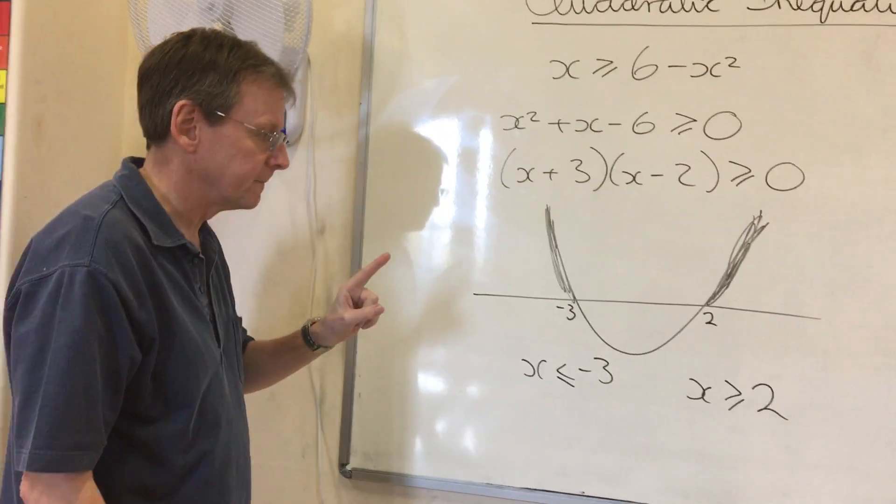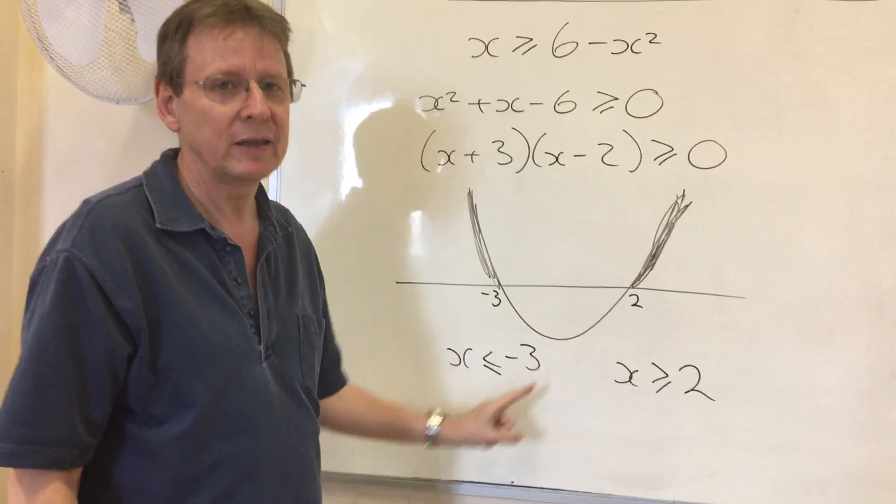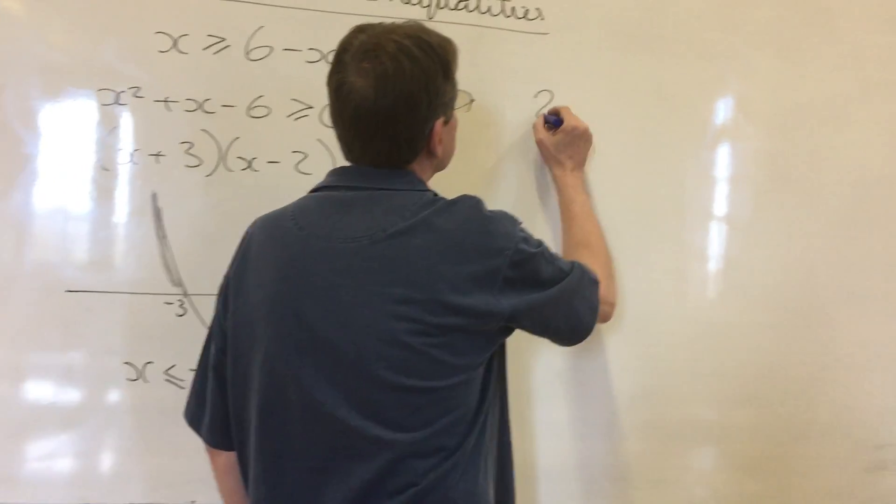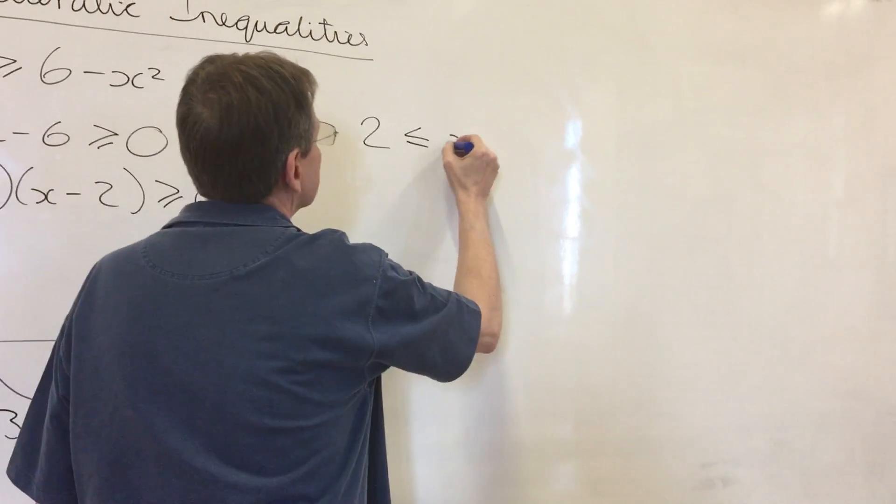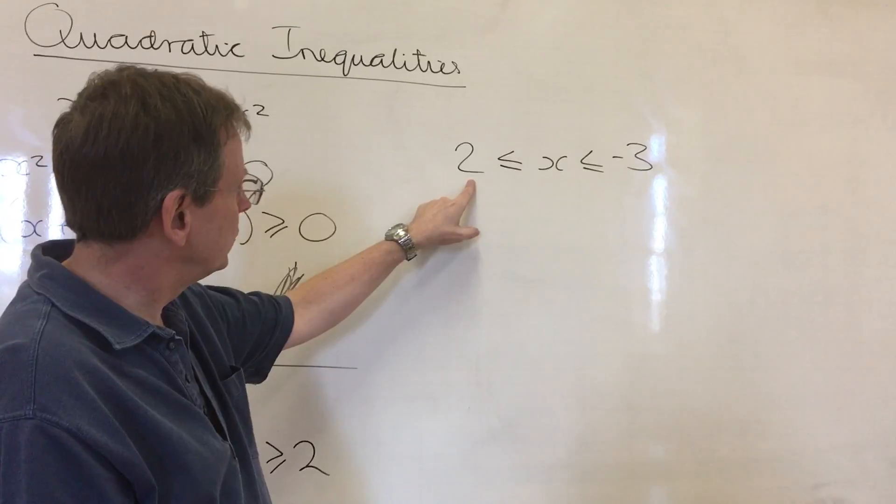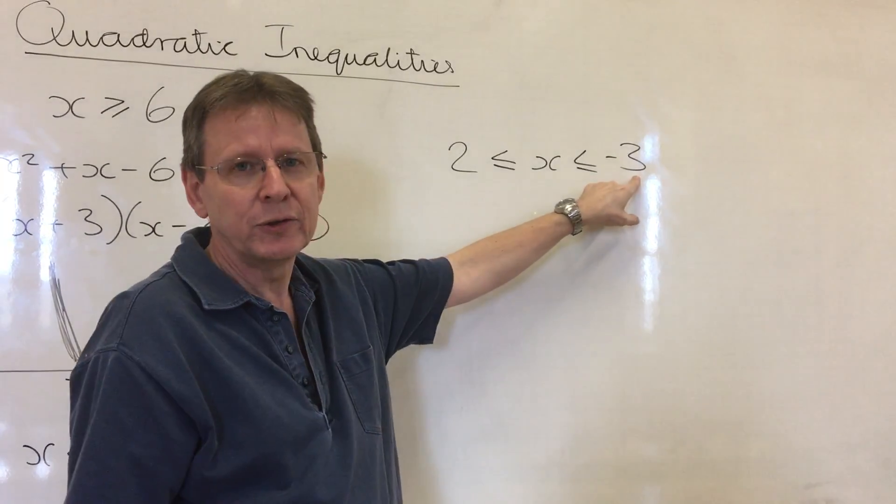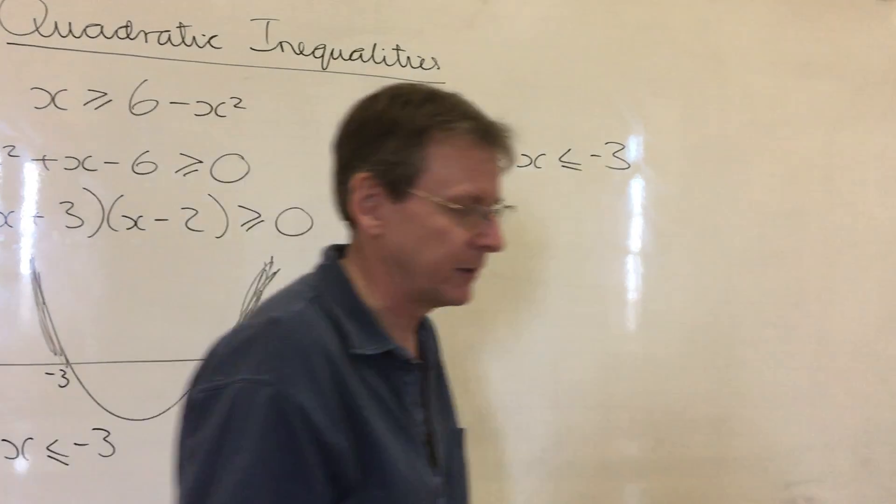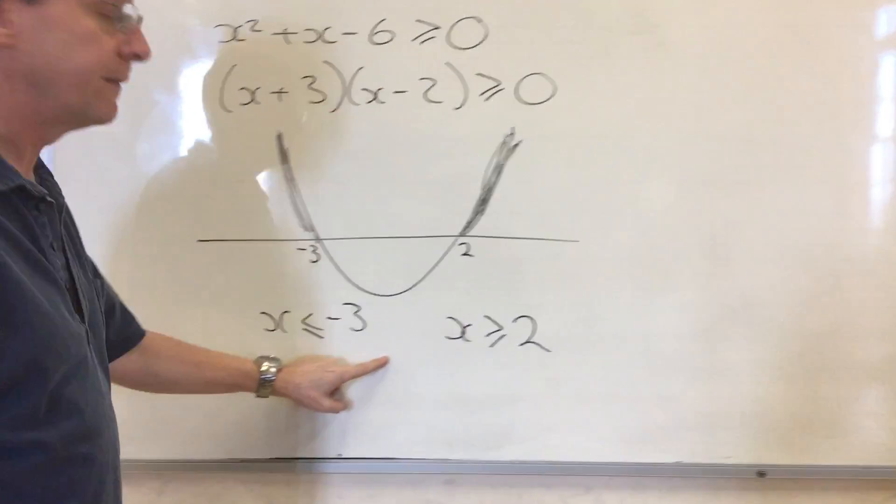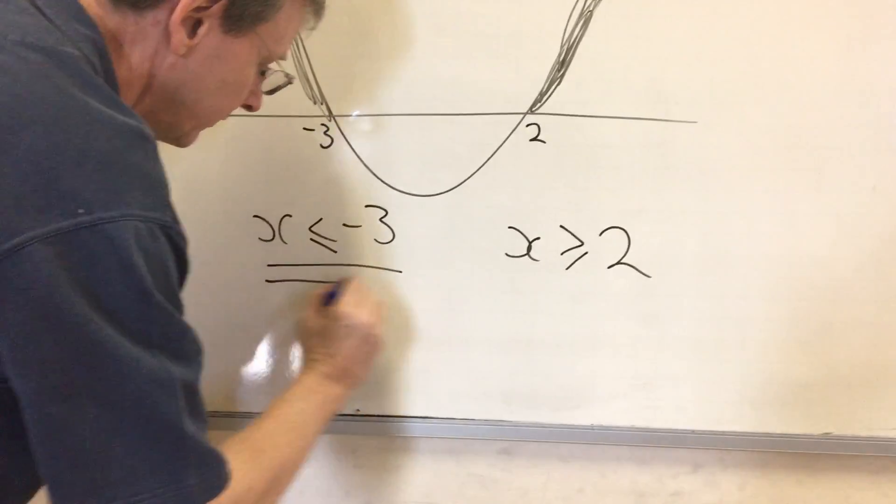But remember, you cannot combine this into a single statement. You cannot write it that way because then apparently we've got 2 is less than negative 3, and that's, of course, complete rubbish. So don't do that. Therefore, these are our answers.